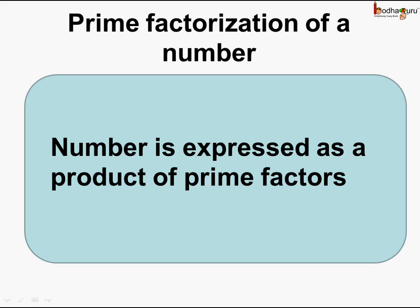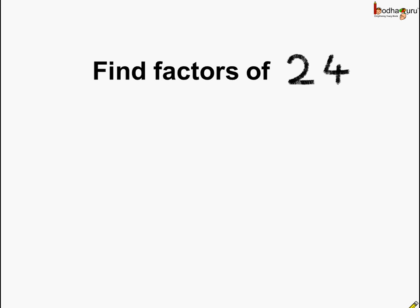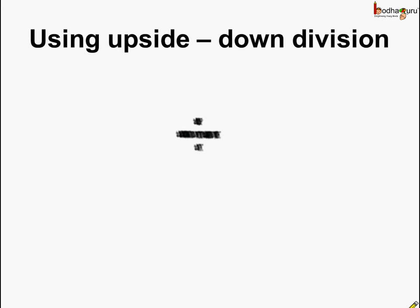So remember, what is prime factorization of a number? It means the number is expressed as a product of prime factors. Now that we know what is prime factorization, let us do prime factorization of 24 using the upside down division method.